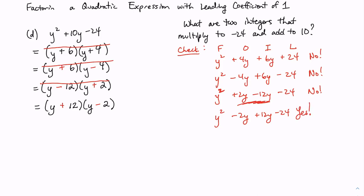So we call this the trial and check method. So this quadratic expression has how many factors? The first factor is y plus 12. The second factor is y minus 2. So there's two factors for this quadratic expression.